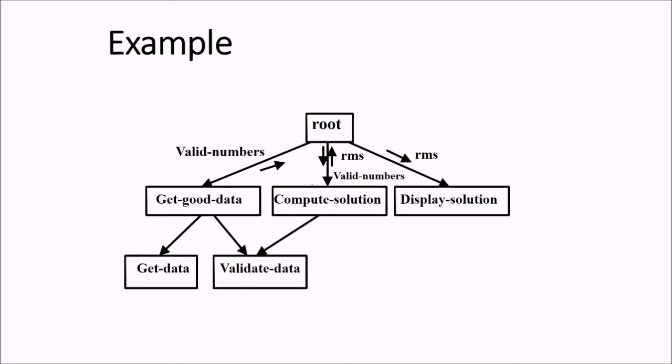Let us take an example. This root is going to call invoke get good data, compute solution and display solution. While this validate data in the third level is being invoked by get good data and compute solution at the same time, this is possible.